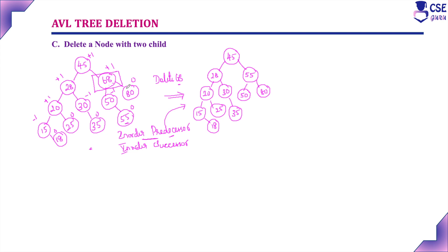After deleting and implementing the in-order predecessor, check the balance factor. The left subtree has no changes, so its balance factors remain the same. In the right subtree: 0, 0, 0 — it is balanced. But checking the root node: the number of left subtree elements is 4 and right subtree is 2, so 4 minus 2 gives +2. The tree is unbalanced. To convert it into a balanced one, we need to apply a rotation — specifically, a single right rotation.